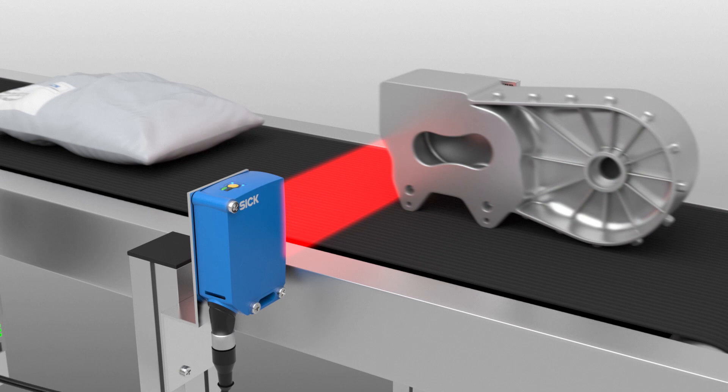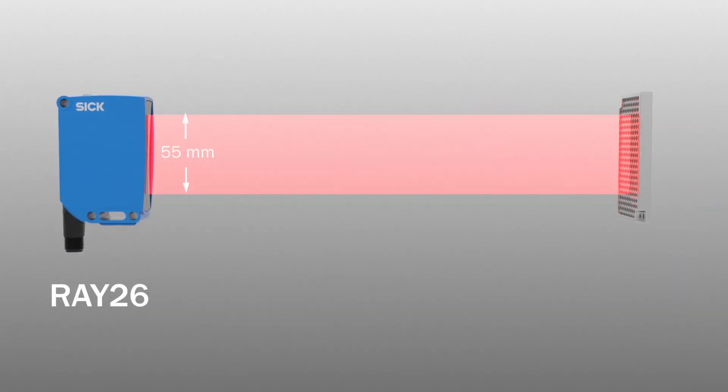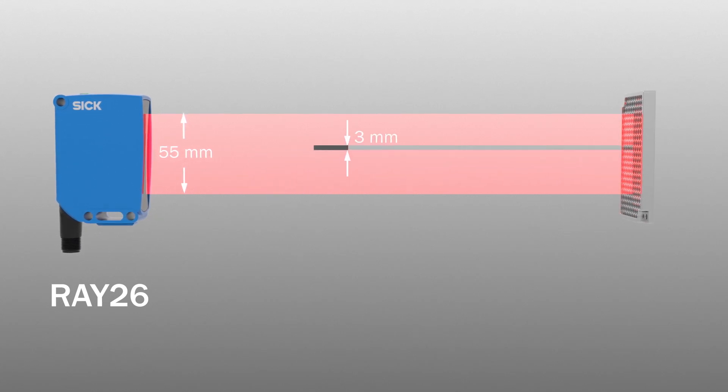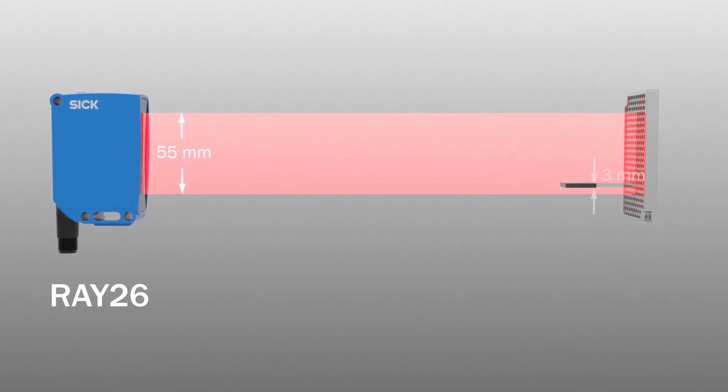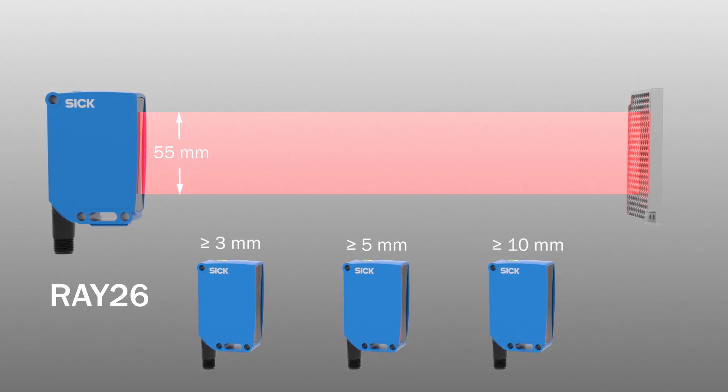The SICK reflex array RAY26 with a detection height of 55 millimeters detects objects bigger than 3 millimeters. Two other variants can be used for detecting 5 millimeter or 10 millimeter objects.